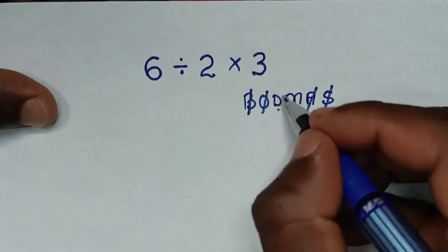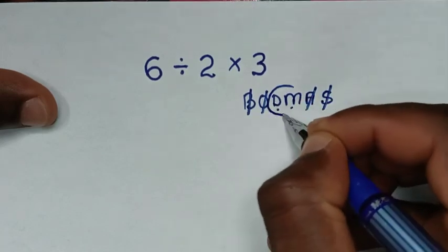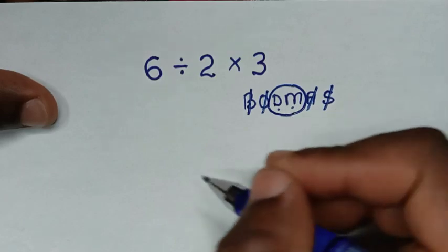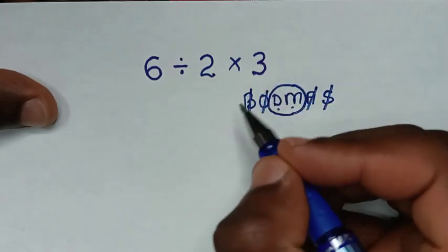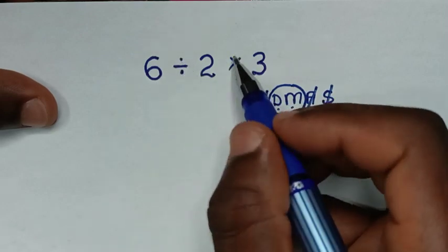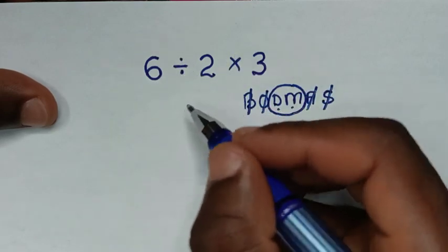When we have both division and multiplication, we solve them from left to right according to which starts first. In this problem, division comes first, then multiplication, so we deal with the division first.